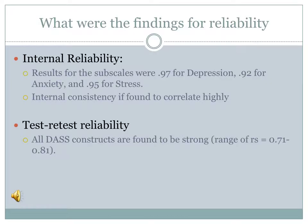A study found that the DASS resulted in high values of internal consistency. Results for the subscales were 0.97 for depression, 0.92 for anxiety, and 0.95 for stress. Another study also found that the DASS scales correlated highly. Test-retest reliability results indicate that all constructs of the DASS are strong, indicating consistency when administered to subjects.